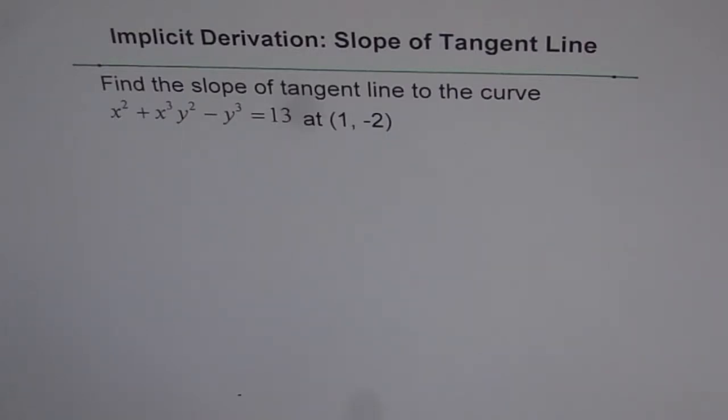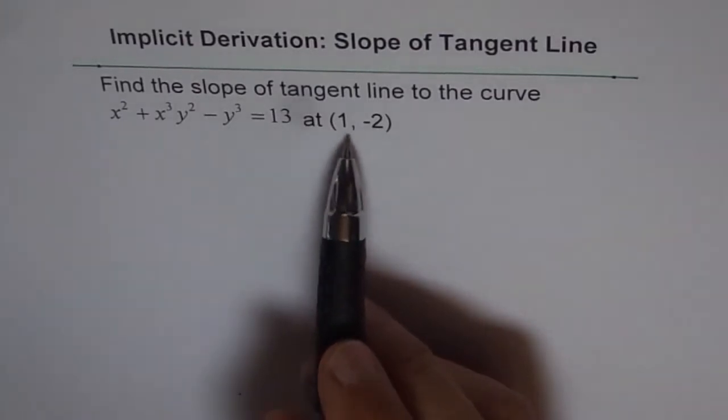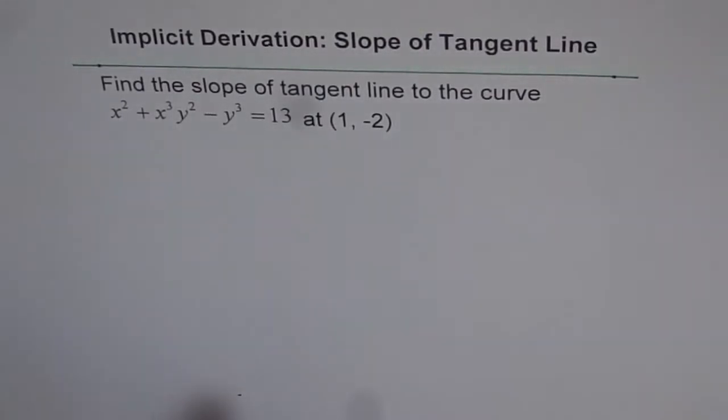So in those questions, we had to isolate dy/dx and get the answer in a general term. Here, we know the point. And therefore, there is no use of isolating dy/dx and writing a general term. Once we do the derivative on both sides, we can substitute x and y and find the slope of the tangent.